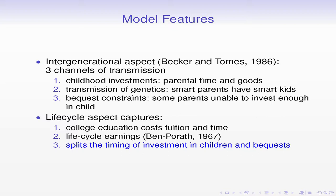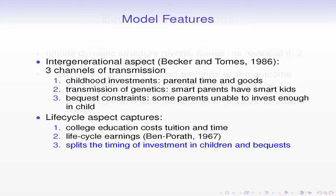What's most relevant for this crowd is that there are things to think about when you consider more than two generations. If you're in a static framework with just a parent and a child, you're ignoring what happens with grandparents or grandchildren. Suppose you want to look at child earnings as the outcome variable—a very standard approach. Then I'll argue that what should be compensated for is not the earnings of the parent.